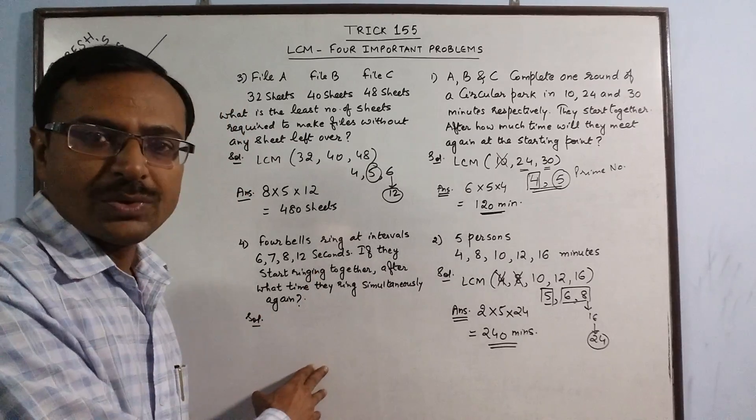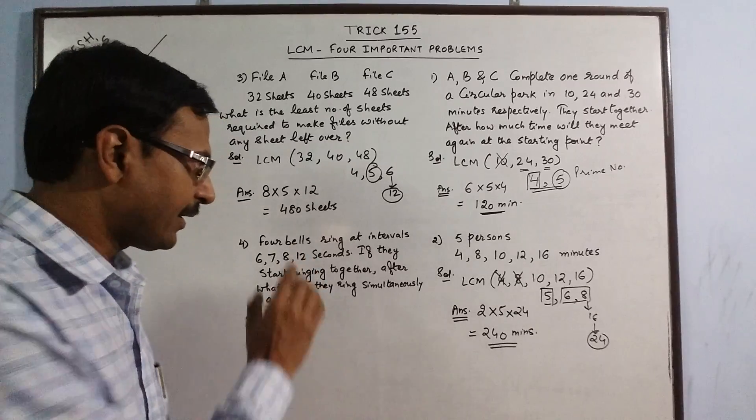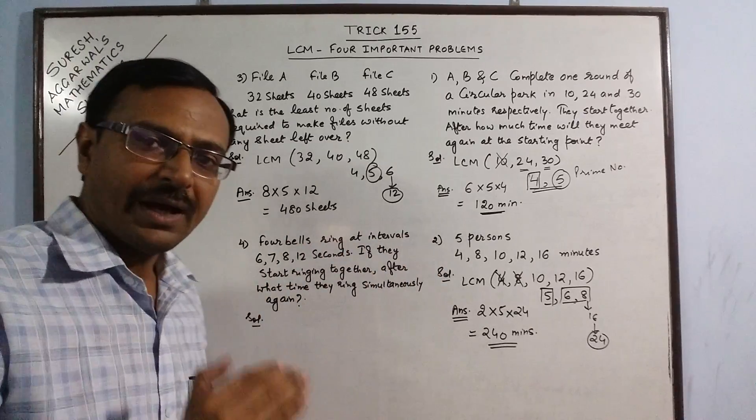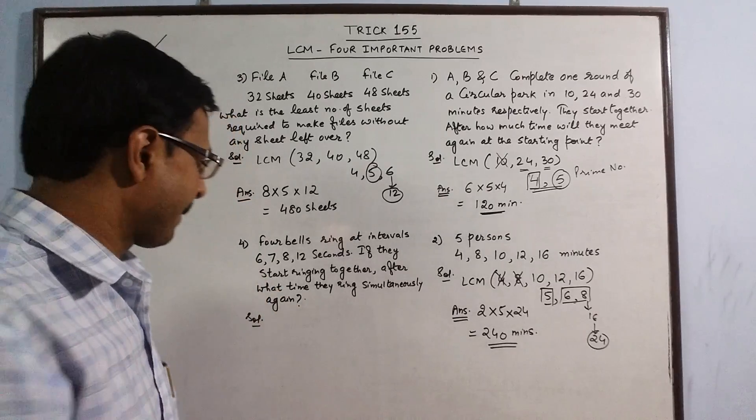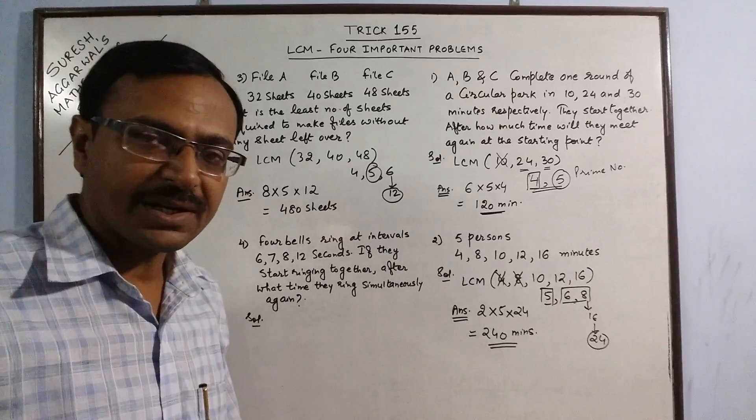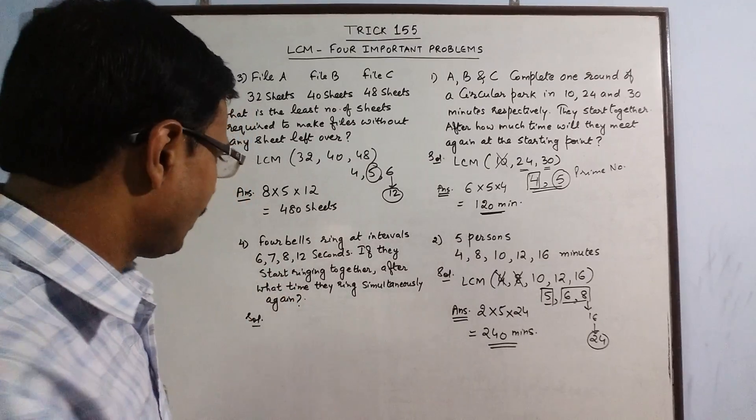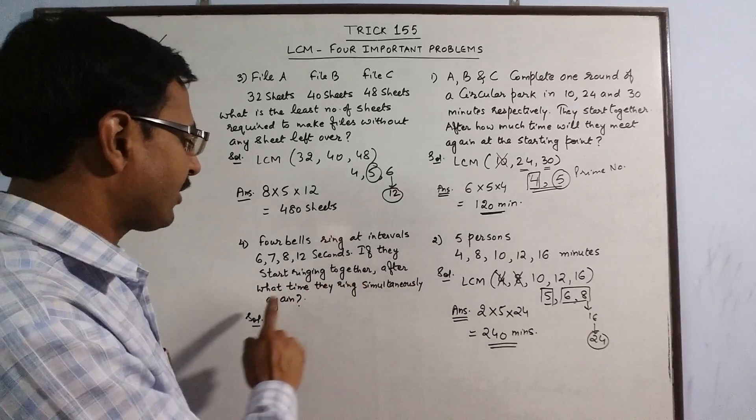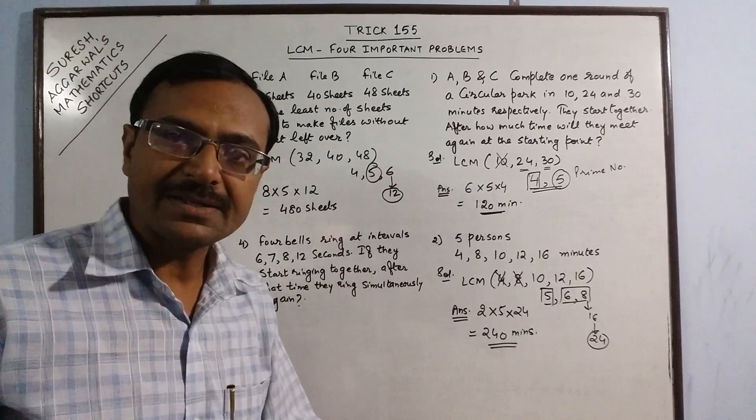Now come to say we have 4 bells. They are ringing at intervals, at particular intervals. The first bell is ringing at an interval of 6 seconds, second 7 seconds, third 8 seconds, and fourth 12 seconds. If they start ringing together, after what time they ring simultaneously again? The question is of finding the LCM.